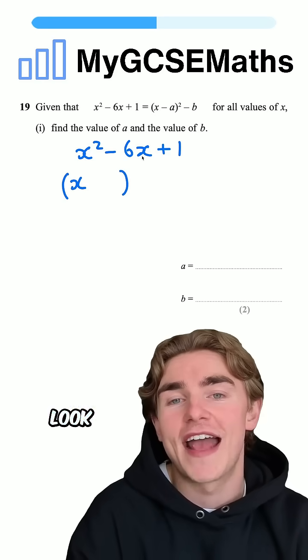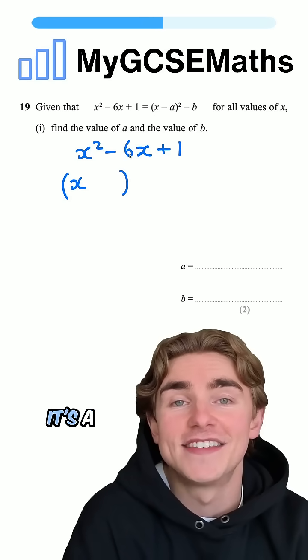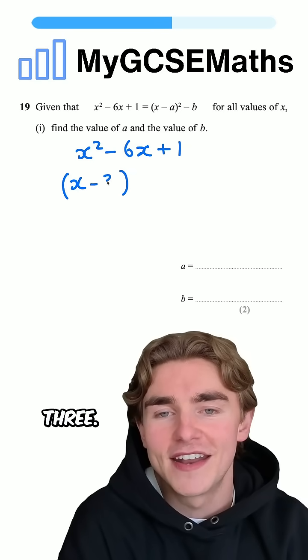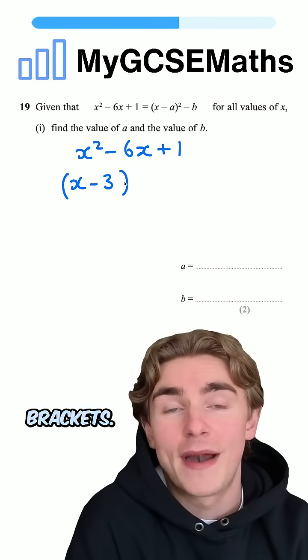The next step, we're going to look at the number next to the x here in the middle. Here, it's a negative 6, and we're going to halve that to get negative 3. That is going to tell us the number that goes inside of our brackets.